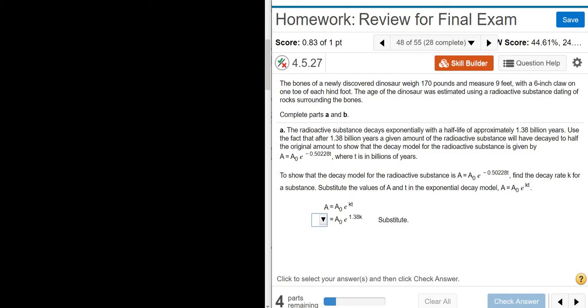So let's go ahead and carefully read through it. The radioactive substance decays exponentially with a half-life of 1.38 billion years. So what that basically means is that every 1.38 billion years, half of it goes away.